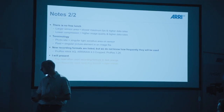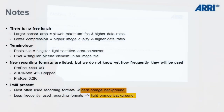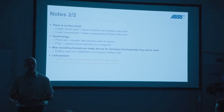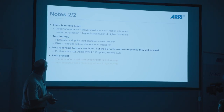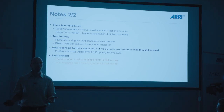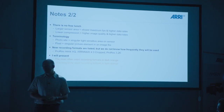There's been a significant increase in the use of ARRI RAW since software 11. With all these things, there's no free lunch. If you want a larger sensor area, that means higher data rate, which probably means lower frames per second and higher cost. If you use lower compression, you get higher image quality, but again higher data rate and higher cost. You always lose something.